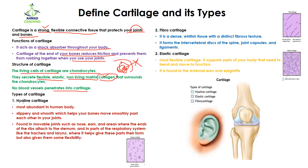The first type is hyaline cartilage. This is the most abundant cartilage in the human body. It is slippery and smooth, which helps your bones move smoothly past each other in your joints. For example, at the knee where two bones connect, hyaline cartilage is present to reduce that friction.